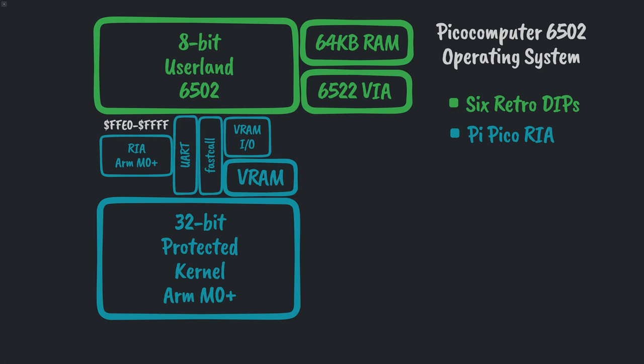Plus, you have another 64K of VRAM. This is memory shared between Userland, the kernel, video, and audio. You can't run 6502 code directly out of that, but you also don't need to put graphics data in your program memory. Let's look at the device drivers and file systems. We have human interface devices — your USB keyboard, mouse, and joysticks. Mass storage controllers are another name for USB flash drives. LittleFS for managing the internal flash. FatFS for the USB flash drives. A communications driver for the UART. Configuration management, so we don't need DIP switches. The real-time clock and networking haven't been started yet, but everything else is nearly complete.